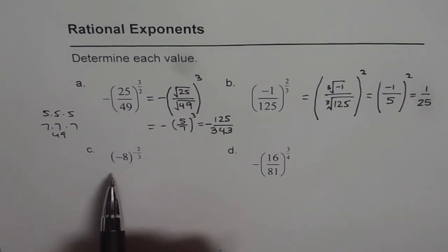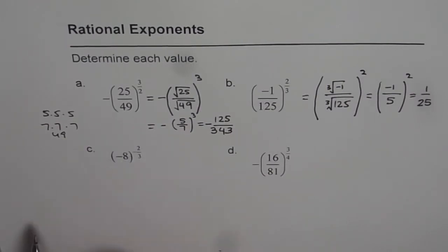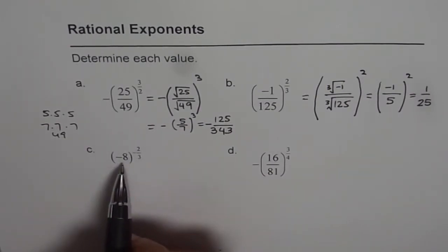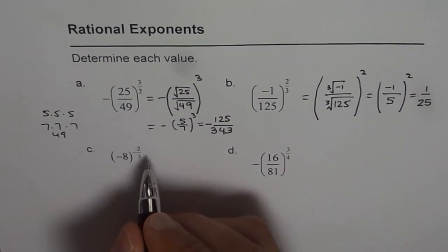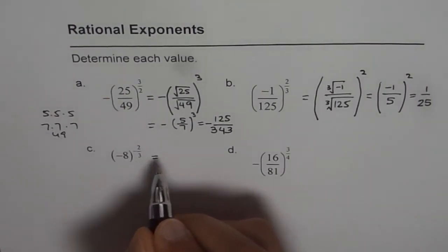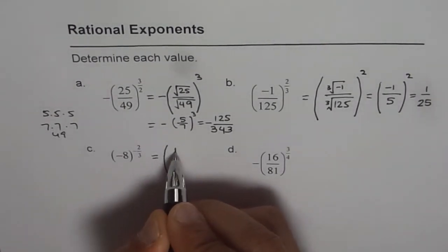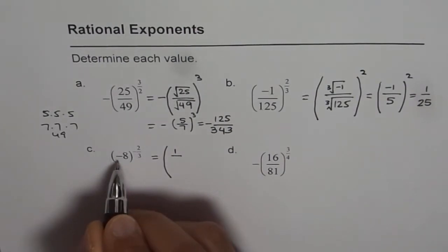Now let's look into C, negative 8 to the power of negative 2 over 3. Now what is the effect of minus here? It makes the number reciprocal. So let us rewrite this number. So we can write this number as 1 over...